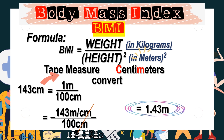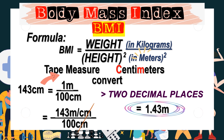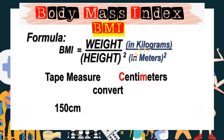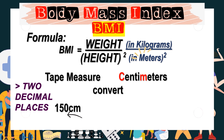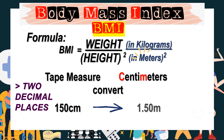We have a shorter way to convert centimeters to meters: by simply placing the decimal point two places from the farthest right of the number. For example, 150 centimeters — the farthest right digit is zero. Counting two decimal places to the left gives us the decimal between 1 and 5, so 150 centimeters becomes 1.50 meters.